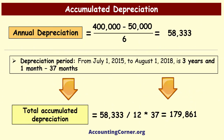Let's make calculations. The cost of the asset was four hundred thousand dollars and the residual value was fifty thousand dollars. Subtracting the residual value from the cost, we get three hundred fifty thousand dollars. This amount is divided by the useful life of six years, giving us an annual depreciation of fifty-eight thousand three hundred thirty-three dollars.